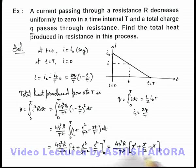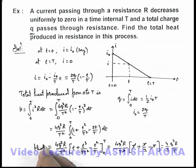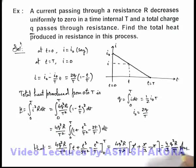And one T also gets cancelled out, and the final result we are getting is (4/3)(q²R/T). This is the total amount of heat produced, which we are calculating here, and that is the answer to this problem.